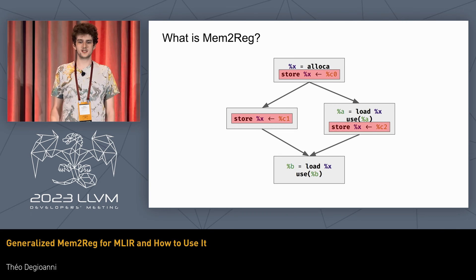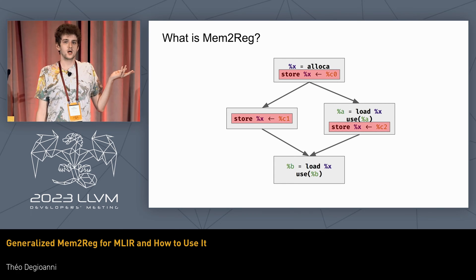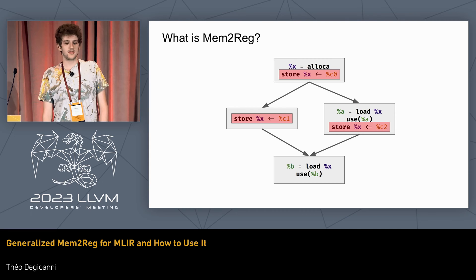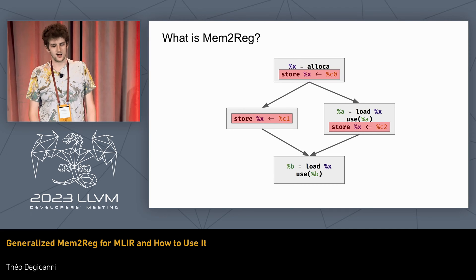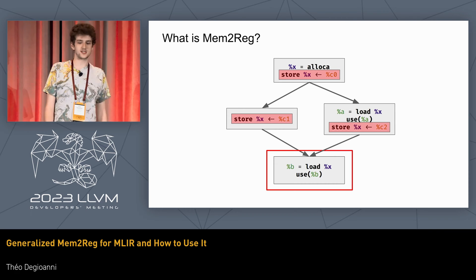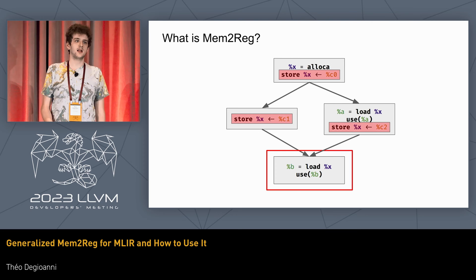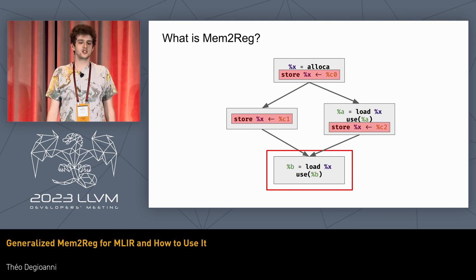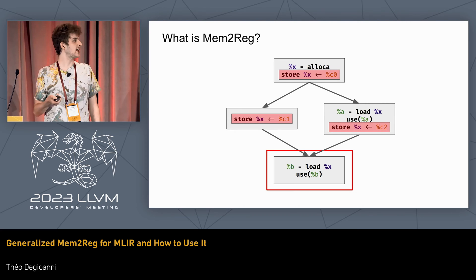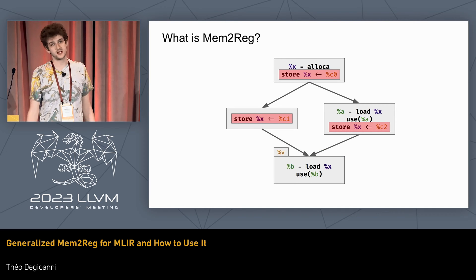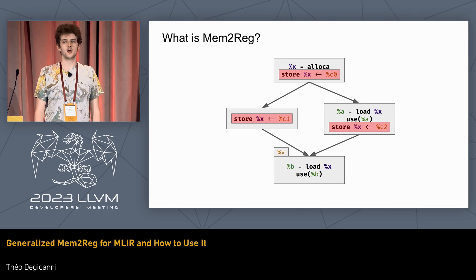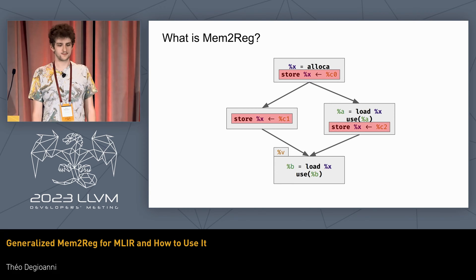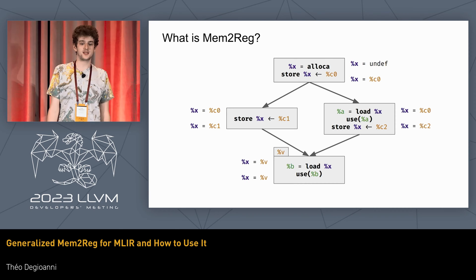What Mem2Reg does is take all the stores to a given value and apply data flow analysis called Iterated Dominance Frontier, which allows you to find all the places where the definitions of the value of X are clashing. Here there's only one — the C1 and C2 definitions are clashing. So the algorithm will clarify what the exact value at each block is for X. To do this, when there's a clash, we add a block argument — this is the SSA construction part. We now assume that at this block, the value of the content of X is V. With this, we have clarified every single point at the entry and exit of each block.